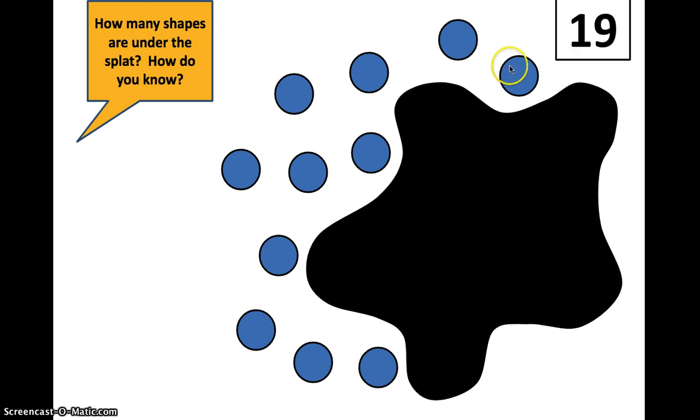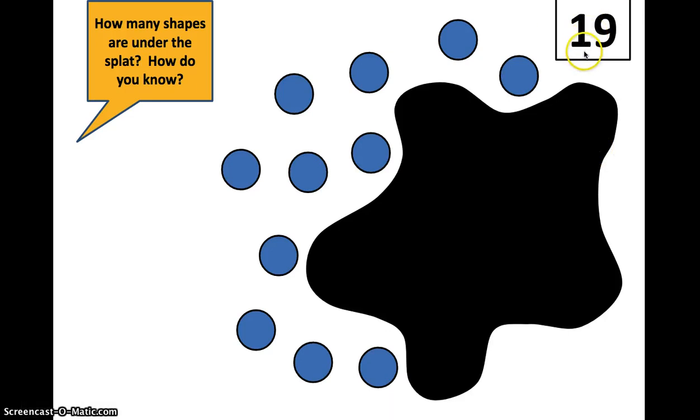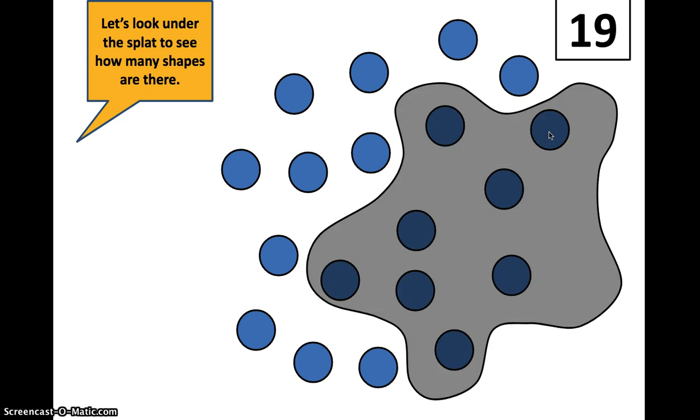So I have 1, 2, 3, 4, 5, 6, 7, 8, 9, 10, 11 outside of the splat. So how many must be under if there's 19 in total? Well, for me, I think about 19 and 11. That means there must be 8 underneath, because 11, 1 and 1, 1 and 8 is 9, 11 and 8 is 19. How else could I know the addition or the subtraction? And then it goes gray, and you can count them, and there are 8 in this case.